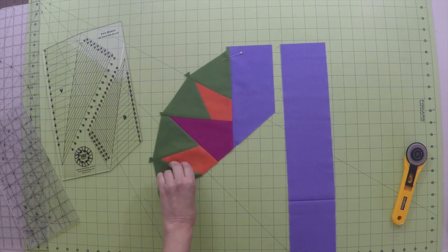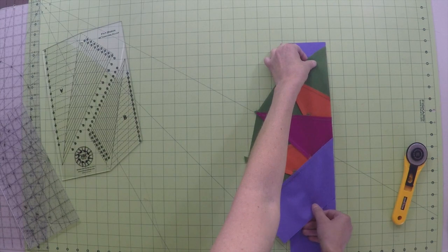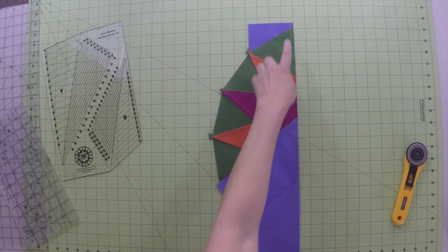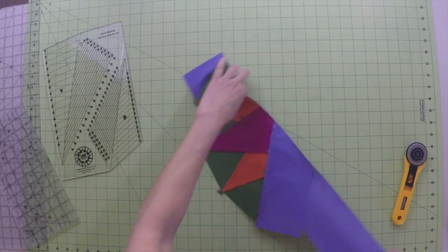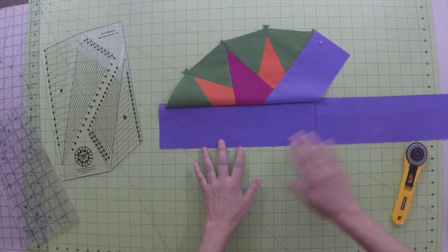Sew this unit onto point 3. Once sewn, press by laying the point 3 strip right side up and pressing the piece unit away from the strip.